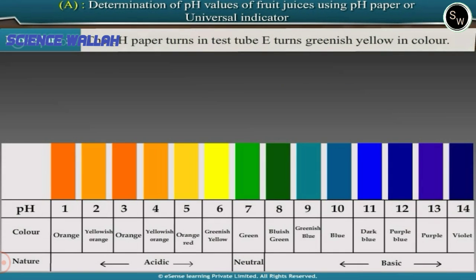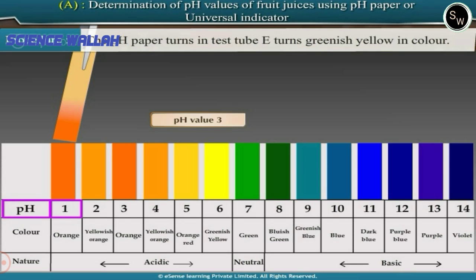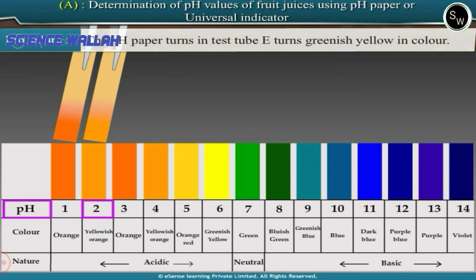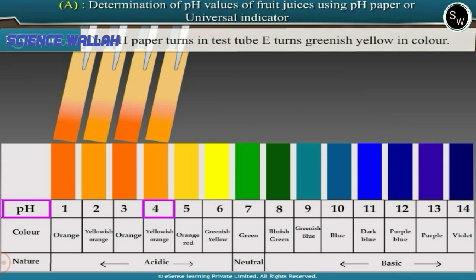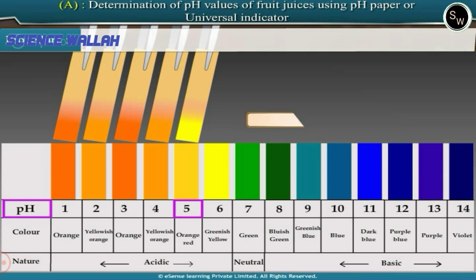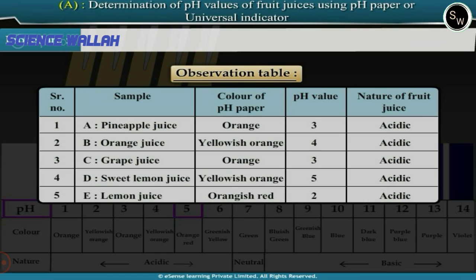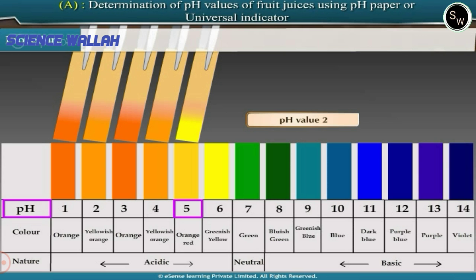On comparing these colors with the standard pH color chart, we can say: pH of pineapple juice is around 3.3, pH of orange juice is around 3.5, pH of grape juice is around 2.9, pH of sweet lemon juice is around 4, and pH of lemon juice is around 2. Therefore, pineapple juice, orange juice, grape juice, sweet lemon juice, and lemon juice are acidic in nature, as their pH values are less than 7.